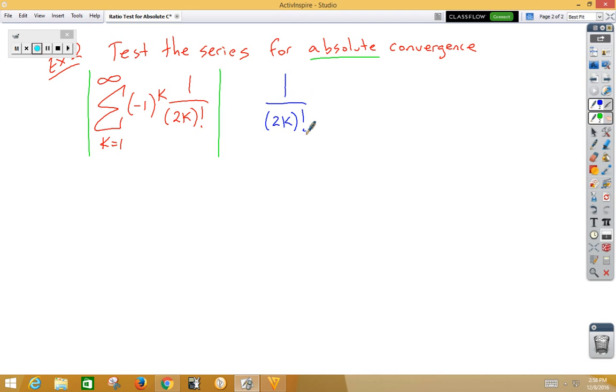We need the next term, so that would be 1 over 2 times k plus 1 factorial. And now we can go ahead and multiply that by the reciprocal, which is 2k factorial over 1.